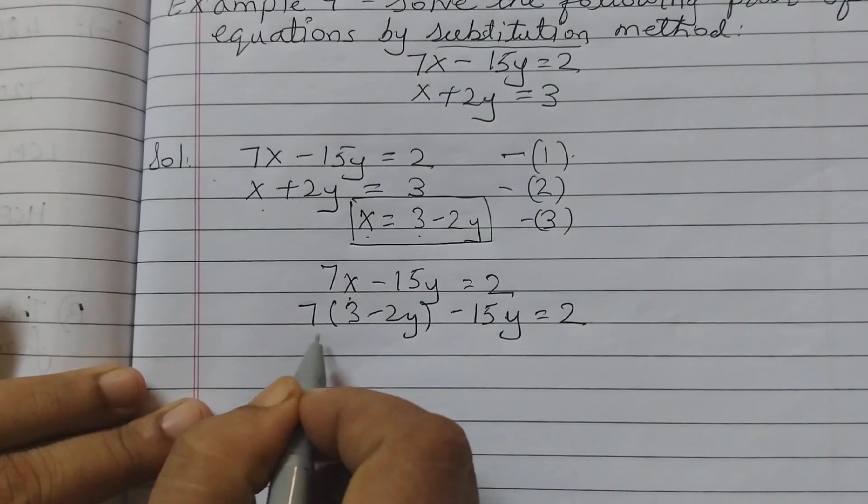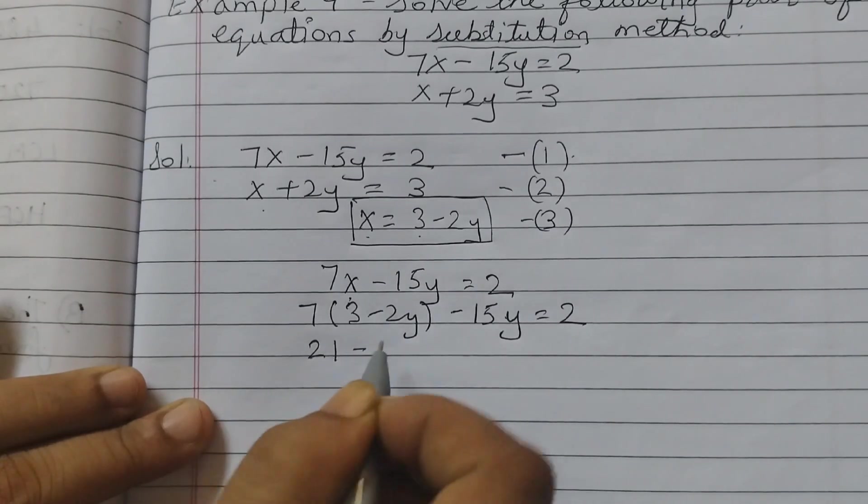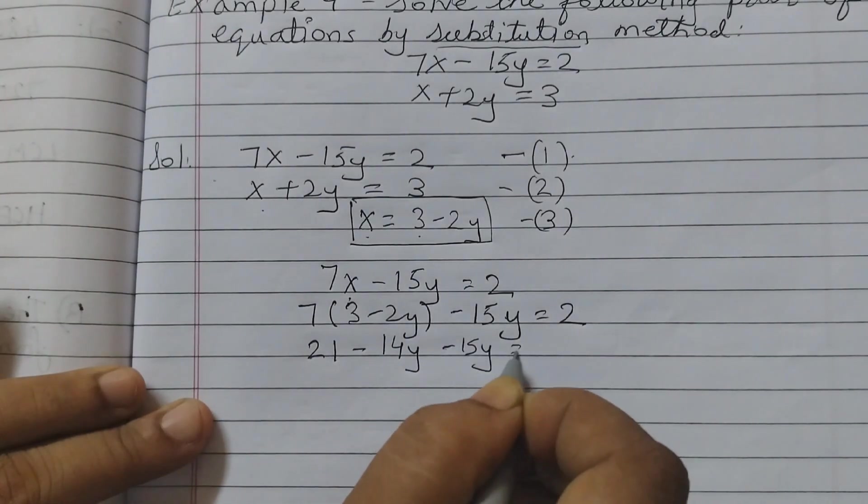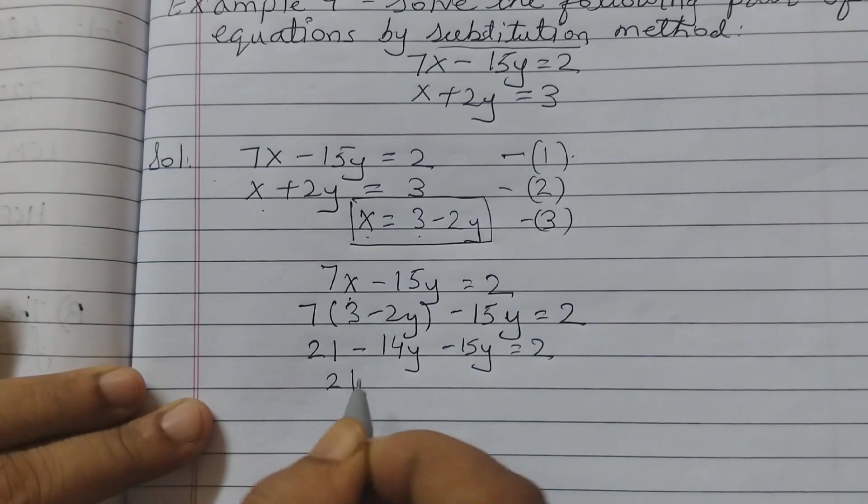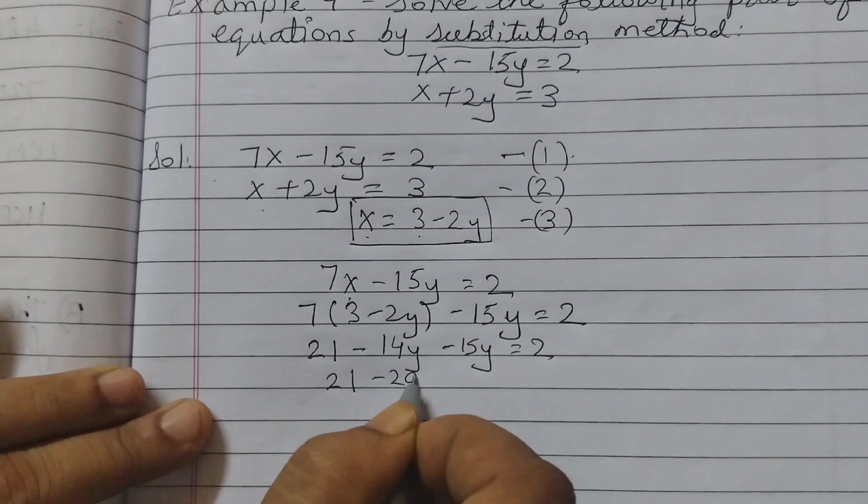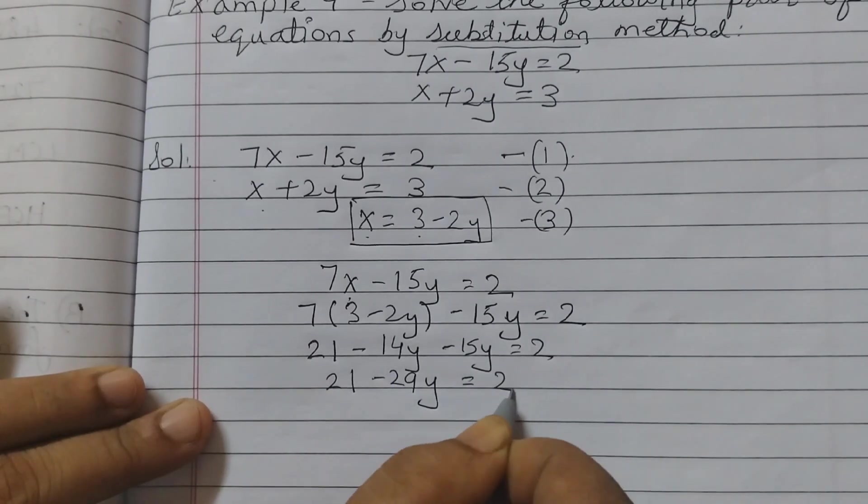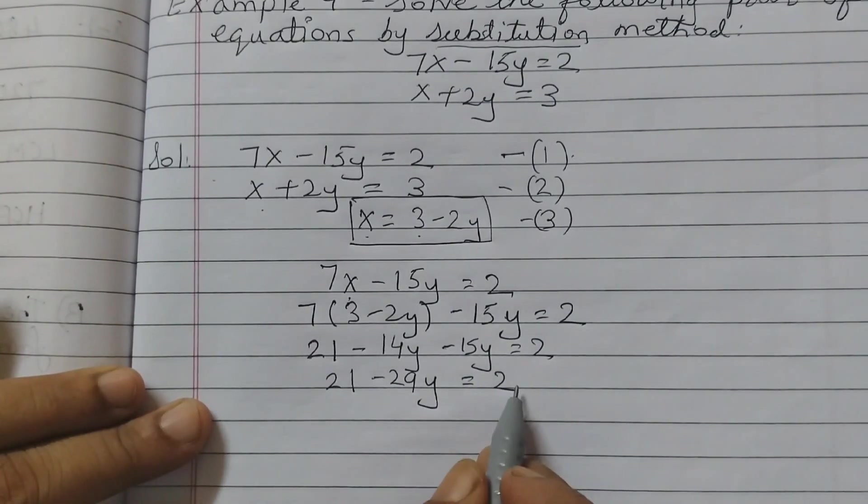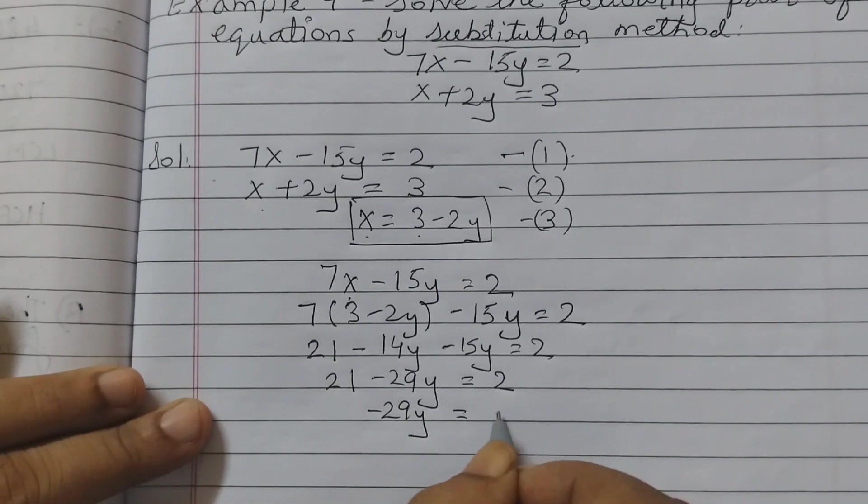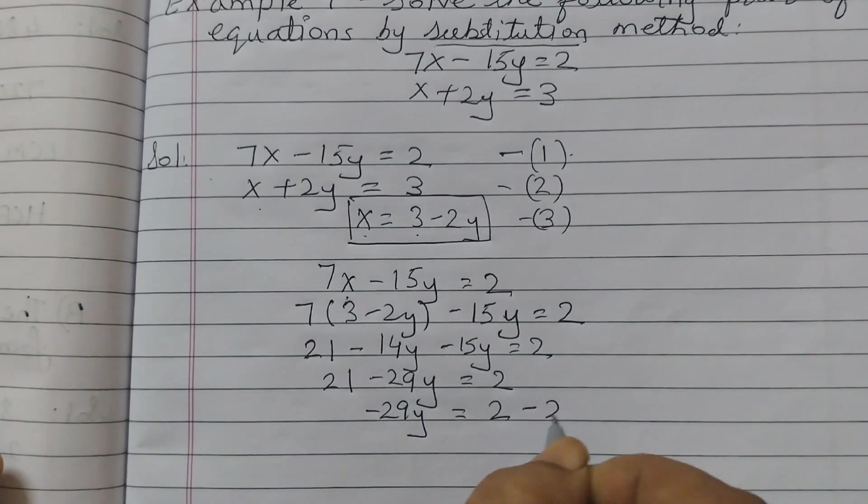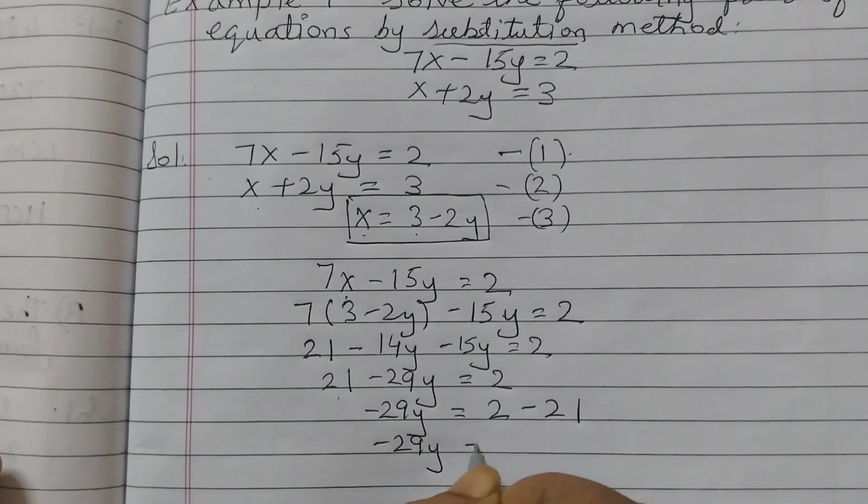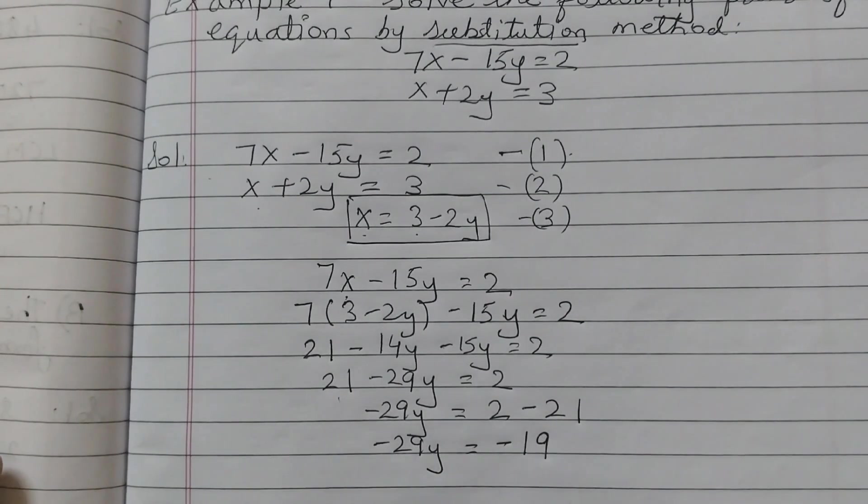Now simplify this: 7 times 3 is 21, minus 7 times 2 is 14, 14y minus 15y equals 2. So 21 minus 14 minus 15 is minus 29. Minus 29y equals 2. Moving 21 to the right side, minus 29y equals minus 19.